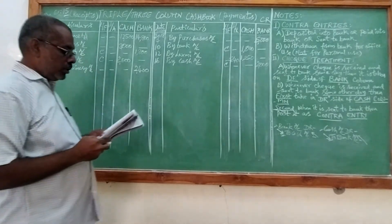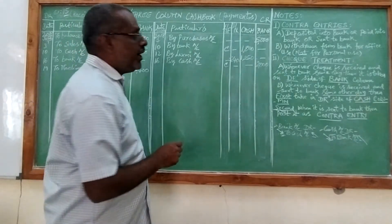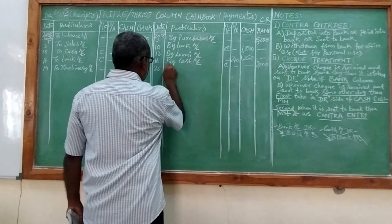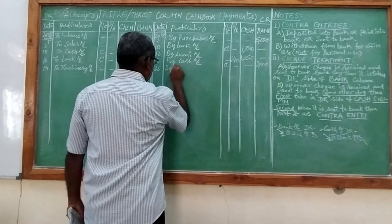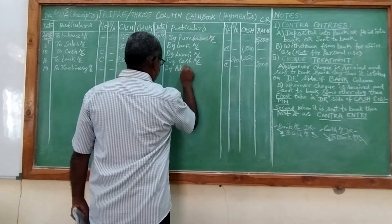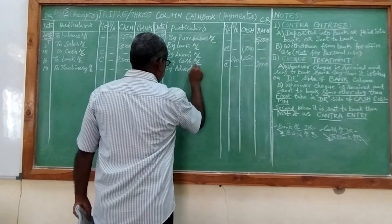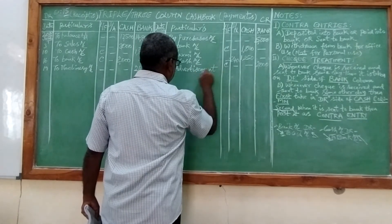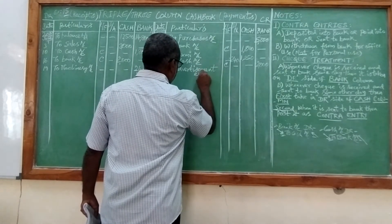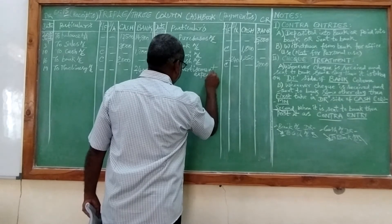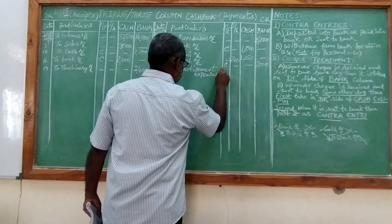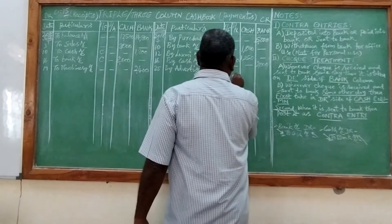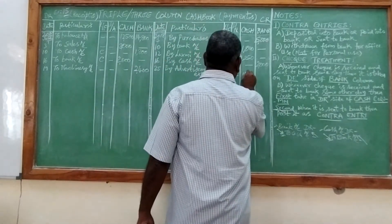June 25th, rent or office expenses — it is a payment, so we are paid on the payment side. By expenses account, 150 in the cash column.